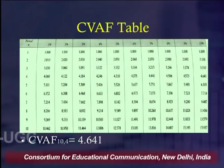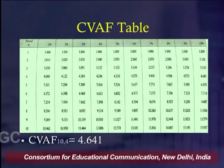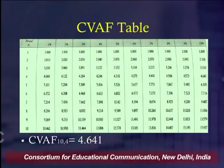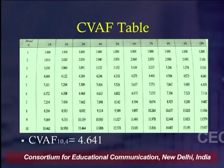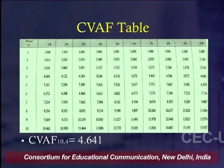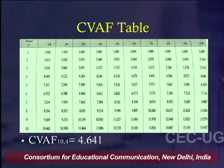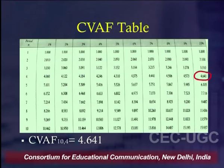From the CVAF table, we look at the intersection of 10 percent and 4 years — not 5 — because the last installment is paid at the end of the fifth year, so no interest is earned on it. If payments were made at the beginning of each year, we would use CVAF for 5 years. Since payments are at the end of each period, we use CVAF for 4 years.